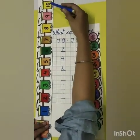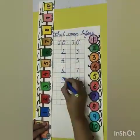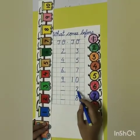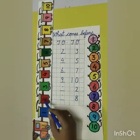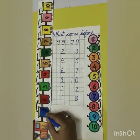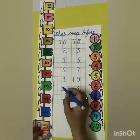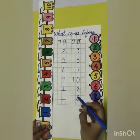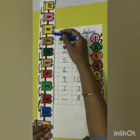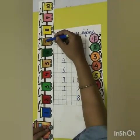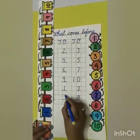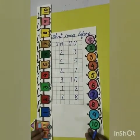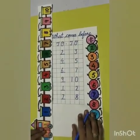Our next number is 10. What comes before 10? 9. So we will write 9 under ones. Next number is 2. What comes before 2? 1. So we will write 1 under ones. Our next number is 8. What comes before 8? 7. So we will write 7 under ones. 7 comes before 8.